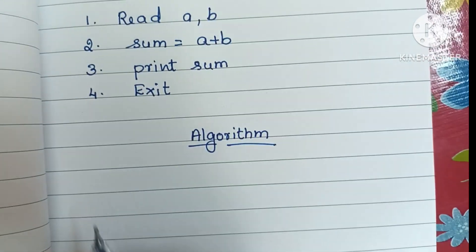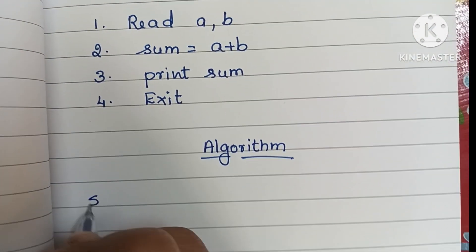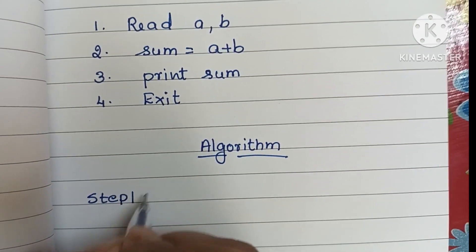Algorithm is a step-by-step process to solve a problem. Algorithm always starts with a start statement, so step one is always start.